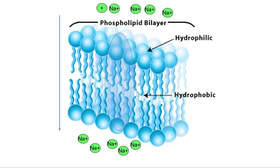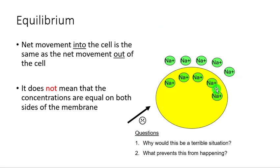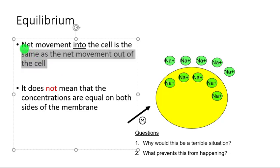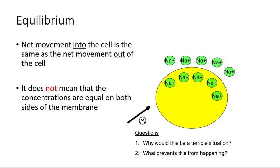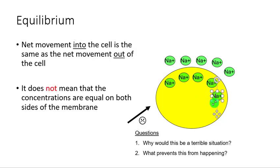Equilibrium is where the net movement into the cell is the same as the net movement out of the cell. It does not mean the concentrations are equal on both sides. Equilibrium is when the rate of exit and the rate of entry is the same. When sodium reaches equilibrium, you actually still have a high concentration of sodium on the outside and a low concentration on the inside.